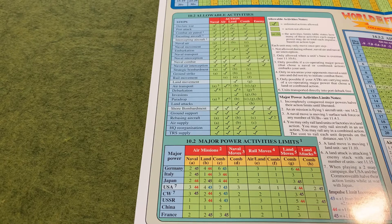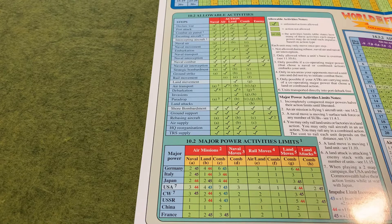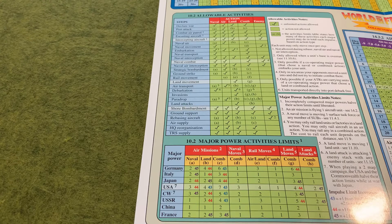So, if it's a two-player game and you're playing the Axis, you will make a selection independently for Japan, Germany, and Italy. Each of them will be making their own decision. They may end up doing the same type of impulse, but it's important to understand that each major power is acting independently when it comes to action type.